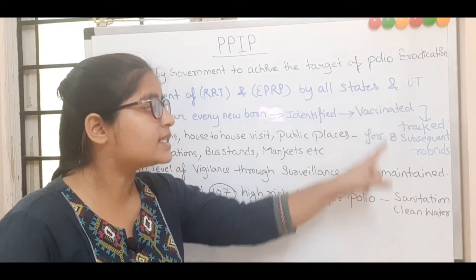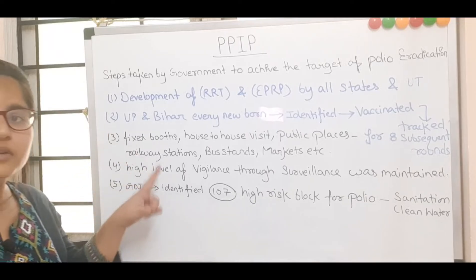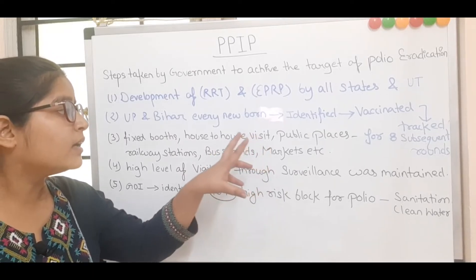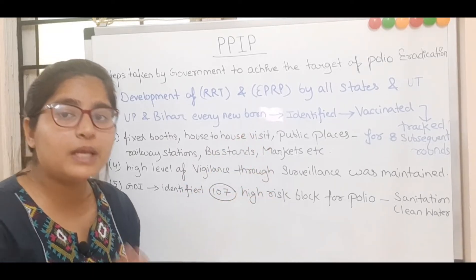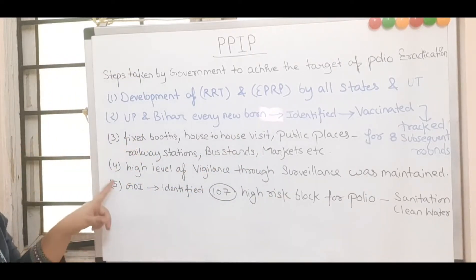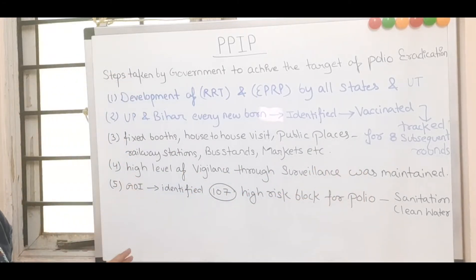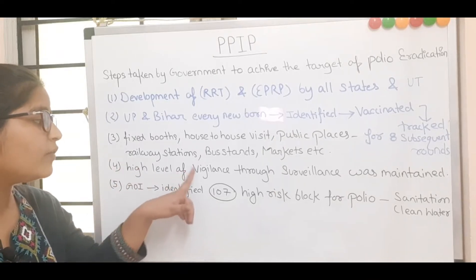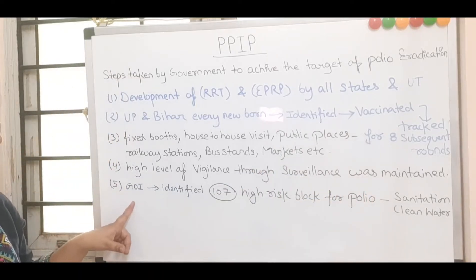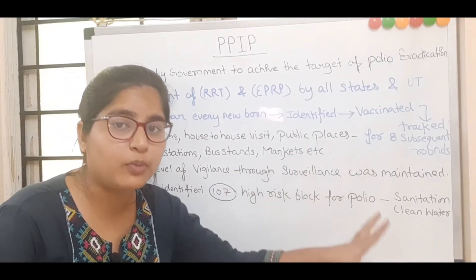Immunization was done through fixed booths, house-to-house visits, and also at public places like railway stations, bus stands, and market places. A high level of vigilance through surveillance was maintained across the country. The Government of India identified 107 high-risk blocks for polio.